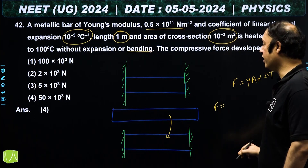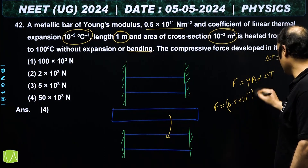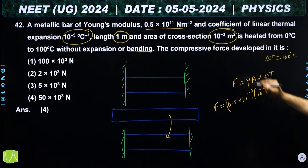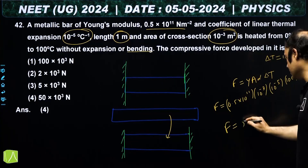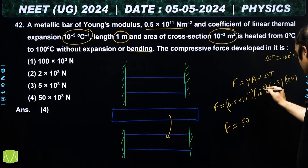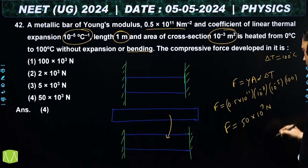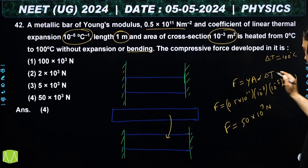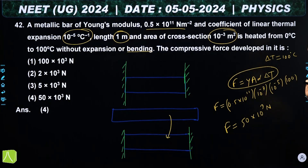Substituting values: Y = 0.5×10¹¹, A = 10⁻³, α = 10⁻⁵, ΔT = 100. F = 0.5×100 × 10¹¹×10⁻³×10⁻⁵ = 50 × 10³ newton. The compressive force generated is 50×10³ N.